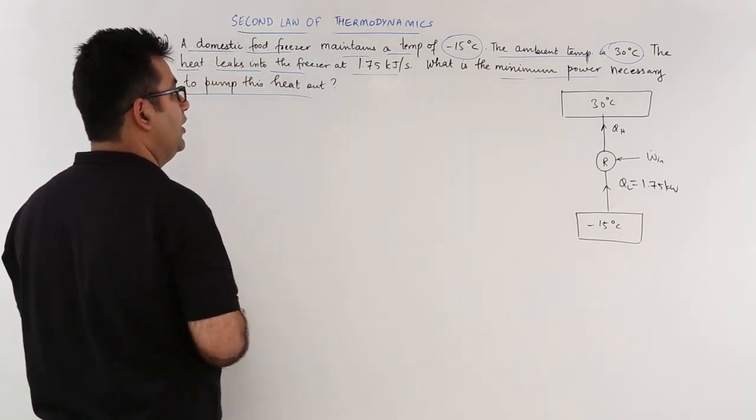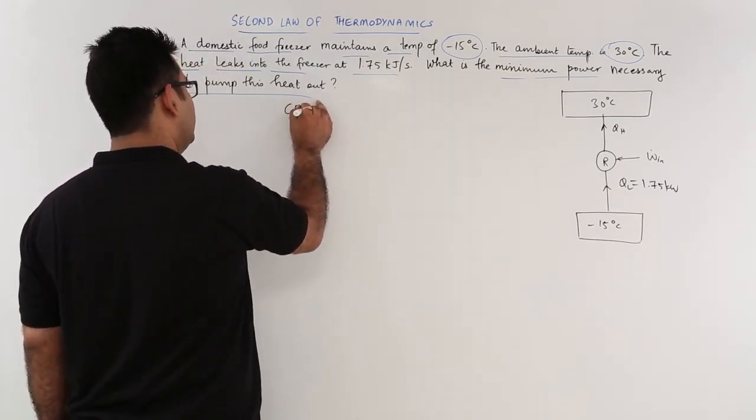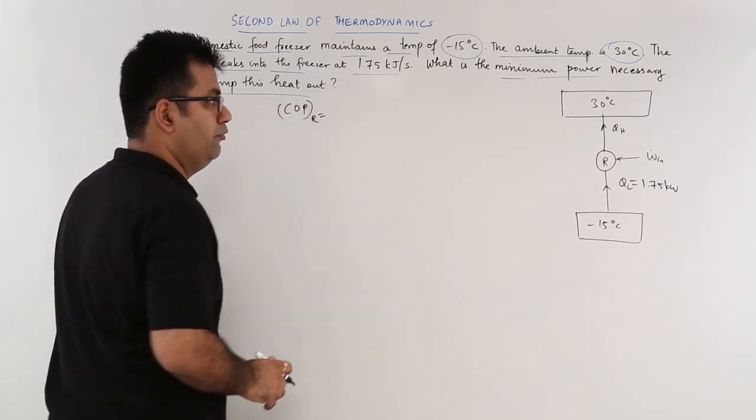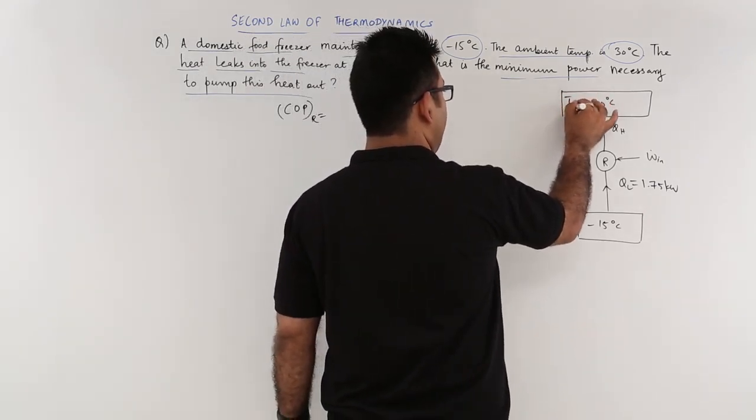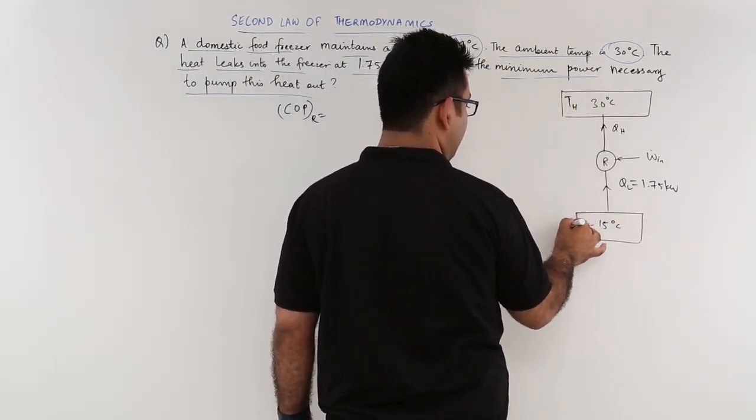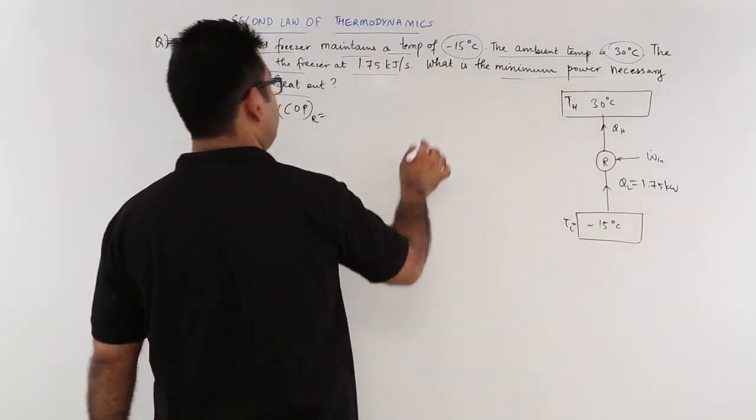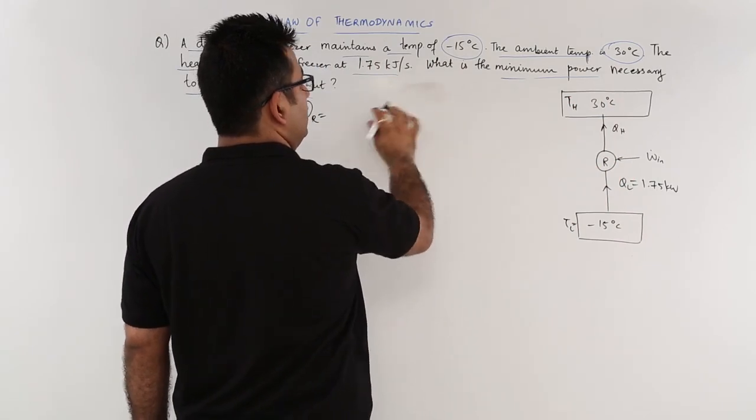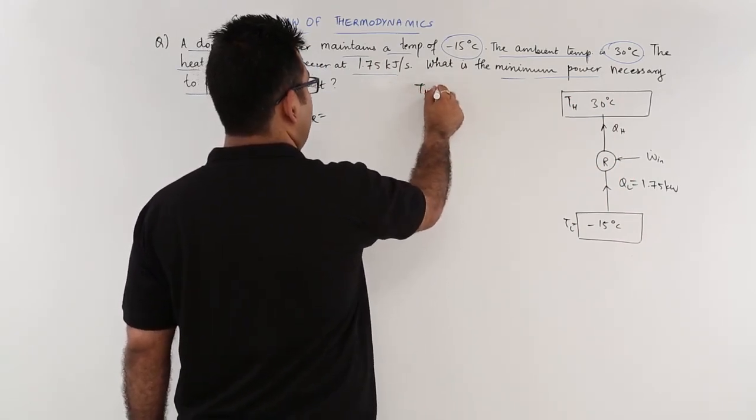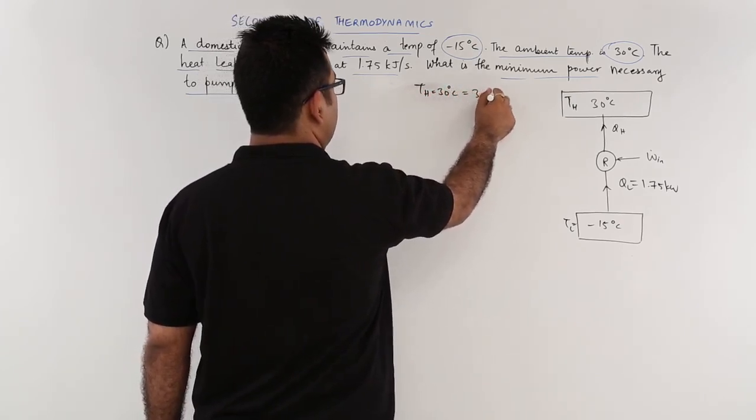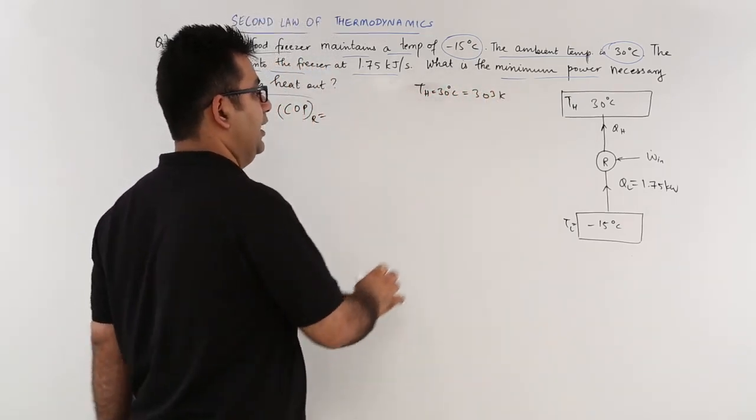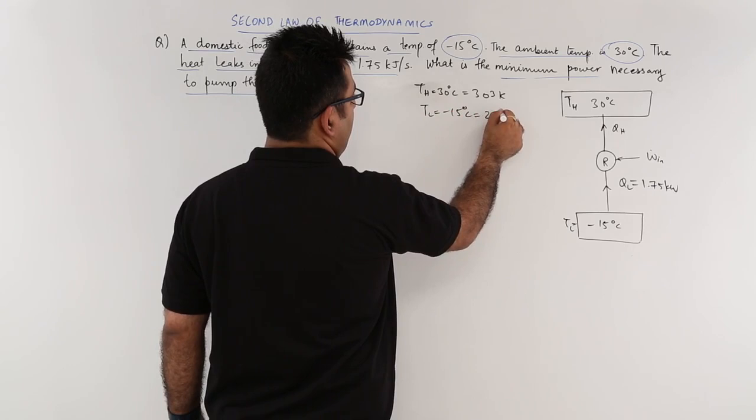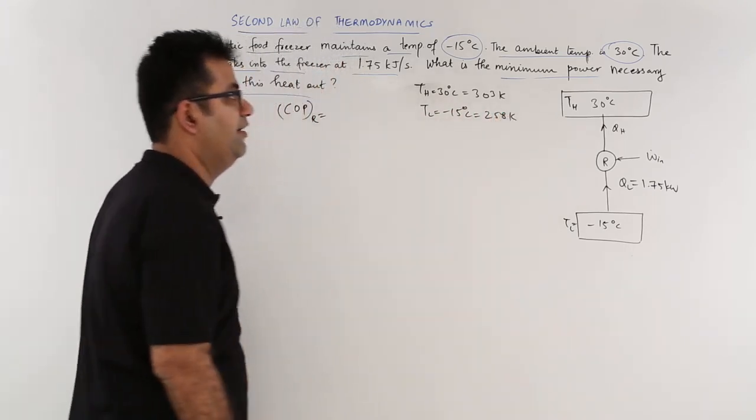So we need to find out W_in. Now if you talk about COP of a refrigerator, it also has one more formula. So this becomes my TH and this is TL. So TH is 30 degrees Celsius which is 303 Kelvin. Then TL is minus 15 which is 258 Kelvin.